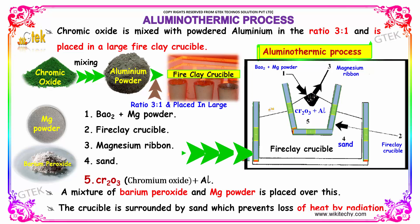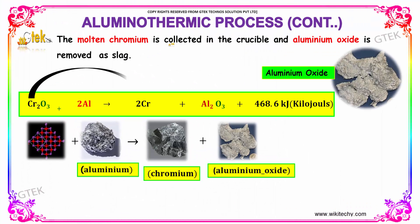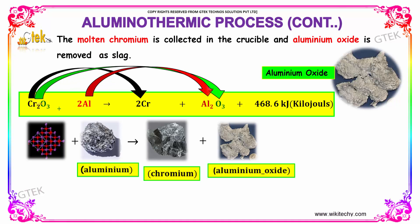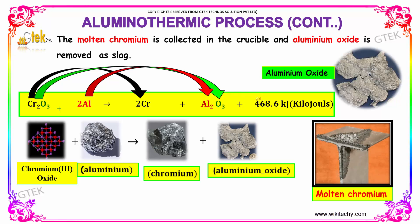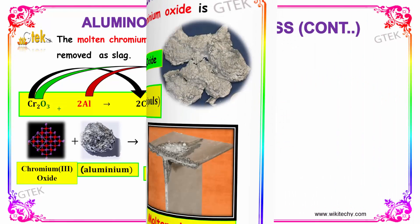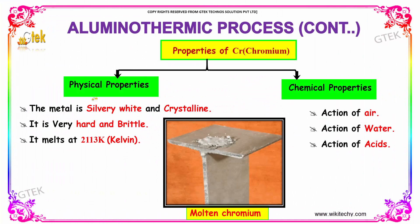The crucible is surrounded by Sand, which prevents the loss of heat by radiation. The molten Chromium is collected in the crucible and the Aluminum Oxide is removed as slag. The equation is: Chromium Oxide plus Aluminum gives Chromium and Aluminum Oxide, releasing a huge amount of energy — 468.6 kilojoules.